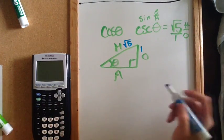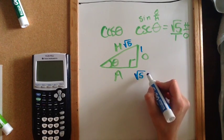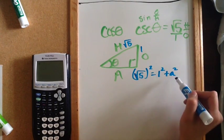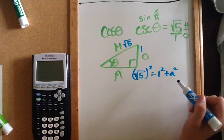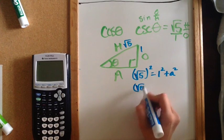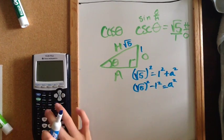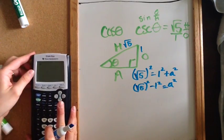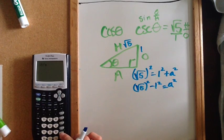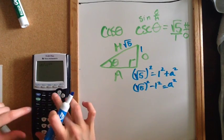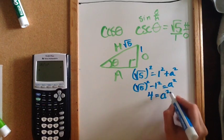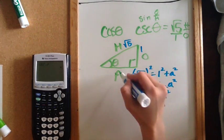I can now find the third side using the Pythagorean theorem: √5 squared equals 1 squared plus a squared. I can rearrange to get √5 squared minus 1 squared equals a squared. In the calculator, make sure to use parentheses — open parenthesis, square root, then 5, close out of the square root, square that whole thing, close parenthesis, then minus 1 squared. That gives us 4 is a squared, which means a is 2.